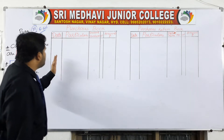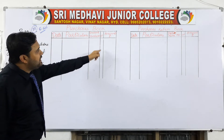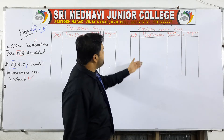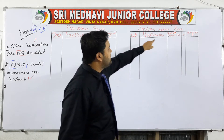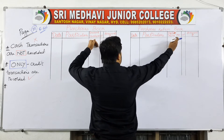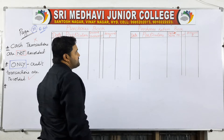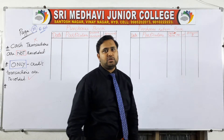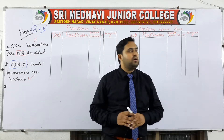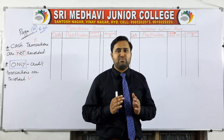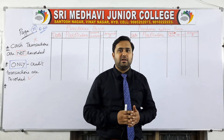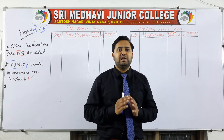The purchase book has five columns: date, particulars, inward invoice number, LF, and amount in rupees. The purchase returns book also has five columns: date, particulars, debit note number, LF, and amount. The key difference between the two books is the third column — the purchase book has inward invoice number, while the purchase returns book has debit note number. Unless the question mentions these numbers, do not write anything — just leave it blank.